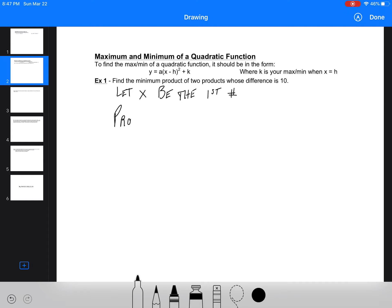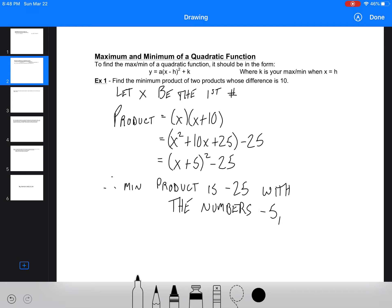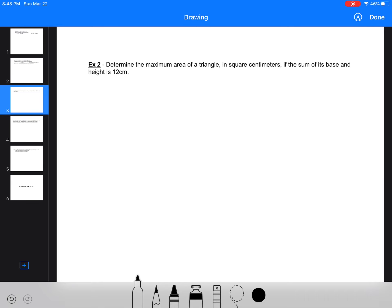I'm not going to use a y value. I'm going to just say the product equals x times (x plus 10). That's going to be x squared plus 10x. I'm going to go ahead and just complete the square right here. Half of 10 is 5, 5 squared is 25. So then we've got (x plus 5) squared minus 25. So therefore, the minimum product is going to be our y value of our vertex, negative 25, with the numbers being negative 5 and 5. Negative 5 and 5 are 10 apart, and that's going to give us the minimum product.